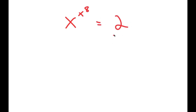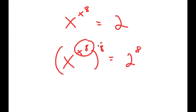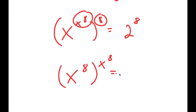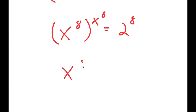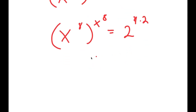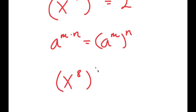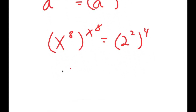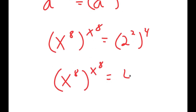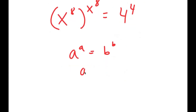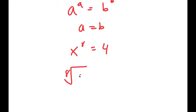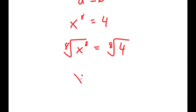Alright, so in this video I'm going to solve the equation x to the power of x to the power of 8 is equal to 2. I'm going to first start by taking the power of 8 on both sides. So I get x to the power of x to the power of 8, all to the power of 8, equal to 2 to the power of 8. Switching the exponents, I get x to the power of 8 to the power of x to the power of 8, equal to 2 to the power of 8. I can rewrite 2 to the power of 8 as 2 squared to the power of 4, which equals 4 to the power of 4. Because this is now in the form a to the power of a equals b to the power of b, a must equal b, so x to the power of 8 equals 4. Taking the 8th root on both sides, I get x is equal to the 8th root of 4.